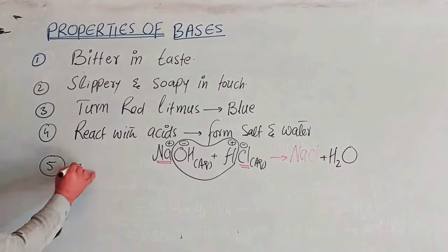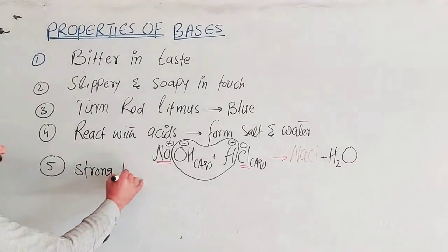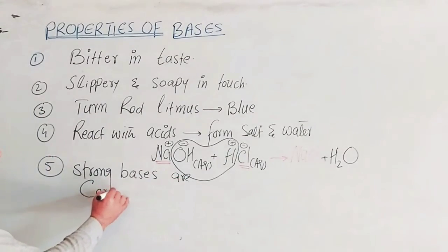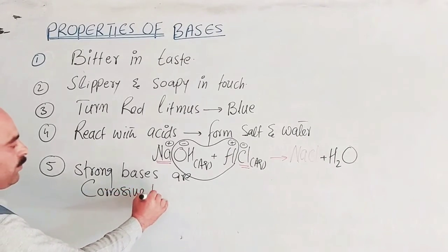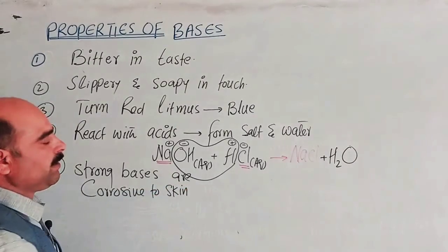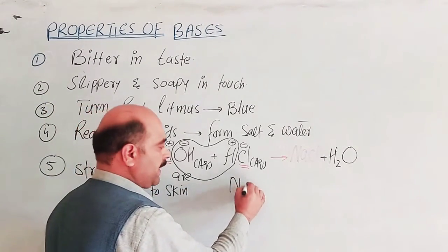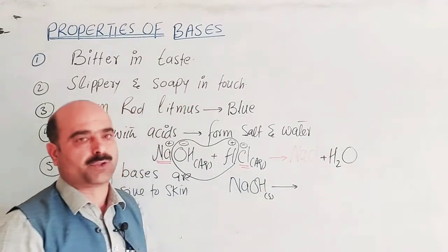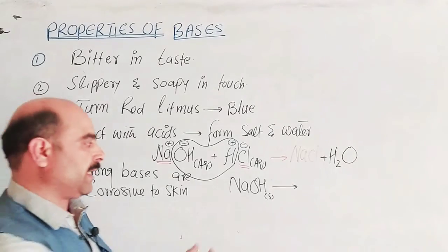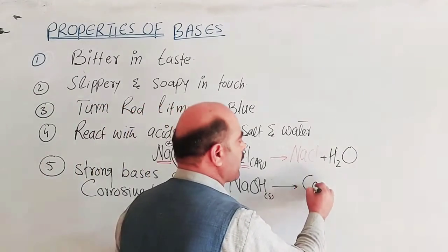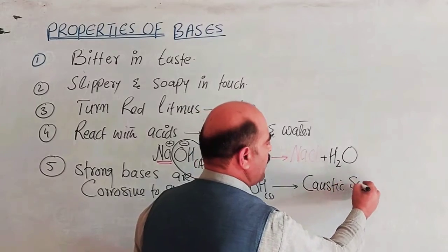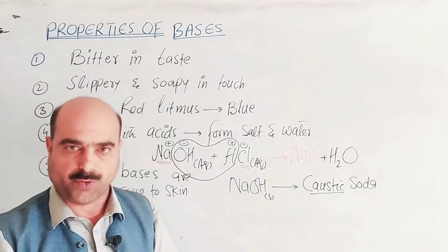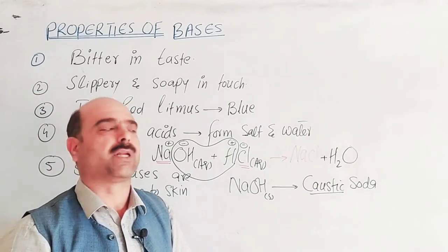Strong bases are corrosive to skin. For example, sodium hydroxide in solid state is slippery to touch and corrosive. It is also called caustic soda because of its caustic, corrosive, and dangerous action on the skin.